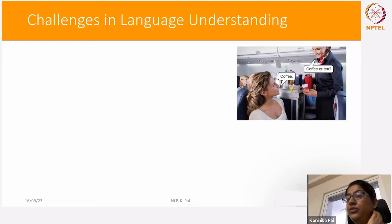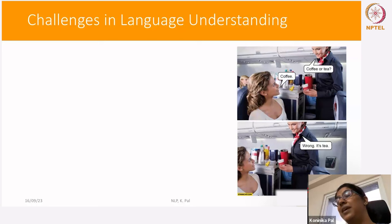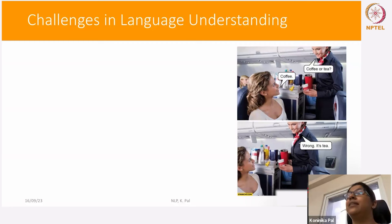Here's a scenario to illustrate this: you're on an airplane and the air hostess asks 'Coffee or tea?' The expected answer is coffee or tea based on beverage preference. But in a joke scenario, she might say 'Wrong, it's a T' — meaning the letter T. This scenario explains that with world knowledge, the meaning of certain phrases changes, and it's very difficult and very challenging for a machine to understand.